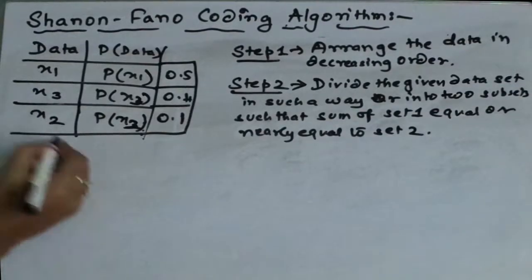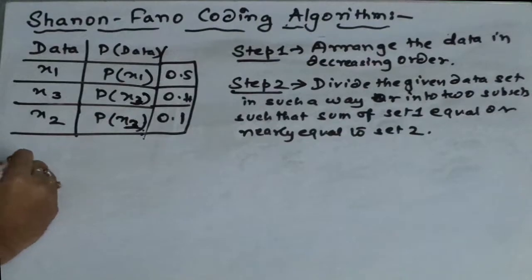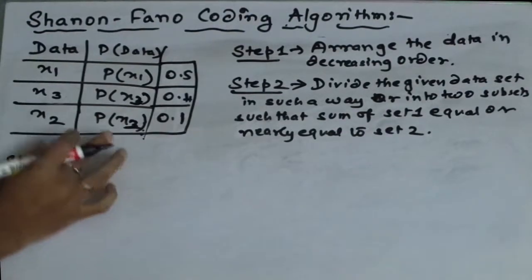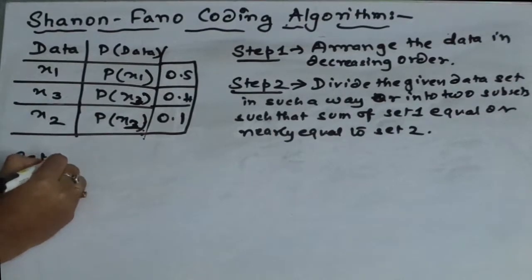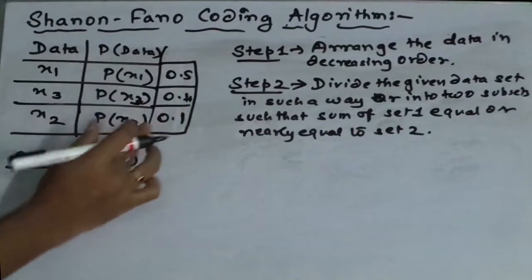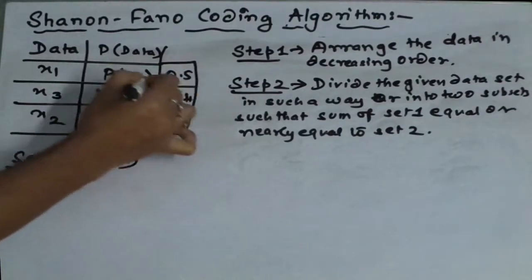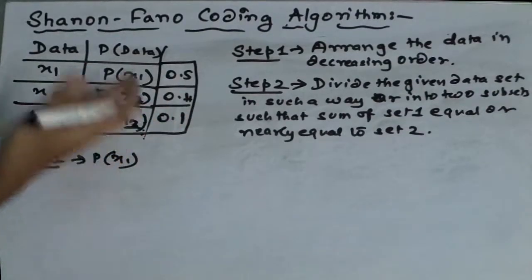What we have to do? Simply, we have to make this data set into set one. Set one is here p of x1. I am dividing it into two sets such that sum of these two sets are almost equal. We can get equal over here.